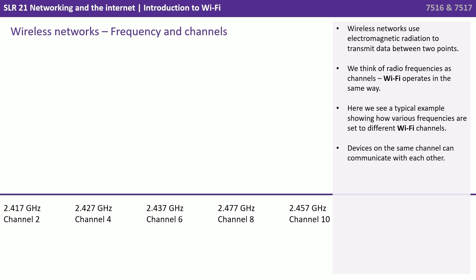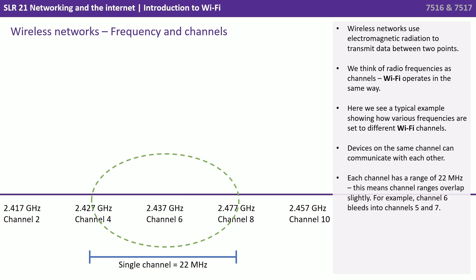Here we see a typical example showing how various frequencies are set to different Wi-Fi channels. Devices on the same channel can communicate with each other. Each channel has a range of 22 megahertz, which means the channel ranges overlap slightly. For example, channel 6 bleeds into channels 5 and 7.